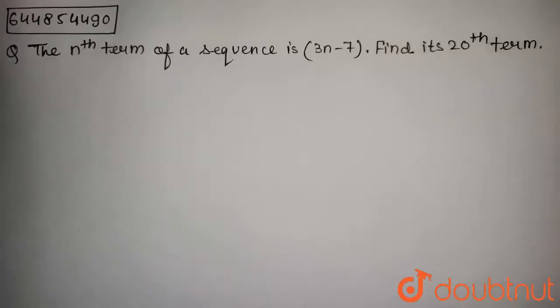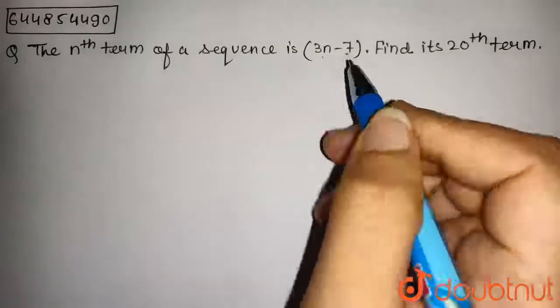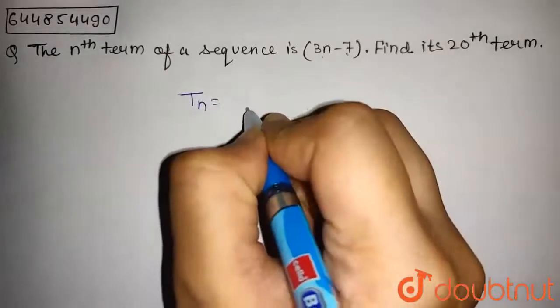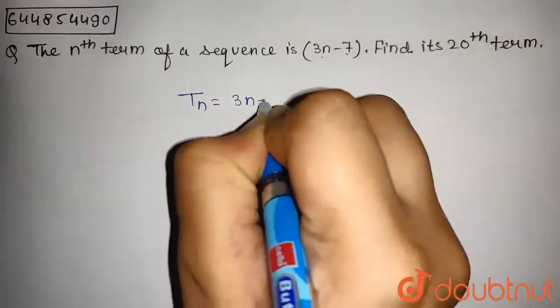In this question, we have to find the 20th term where the nth term is 3n-7. We are given that Tn, the nth term, is 3n-7.